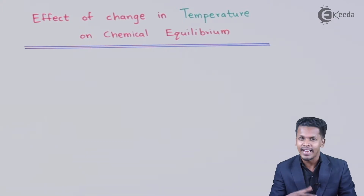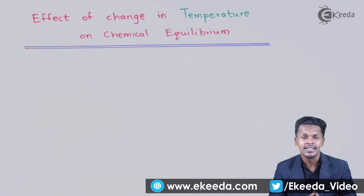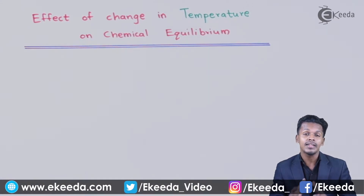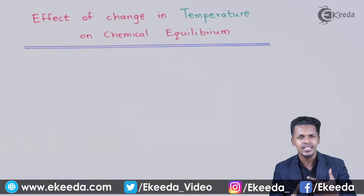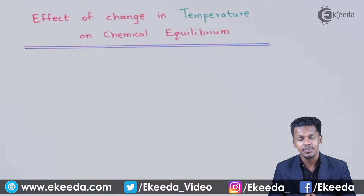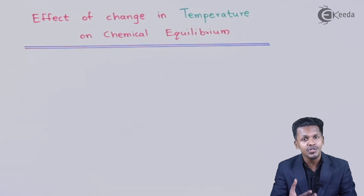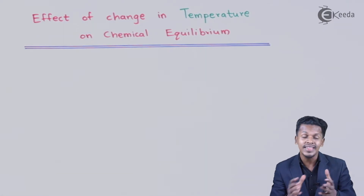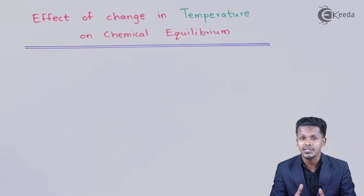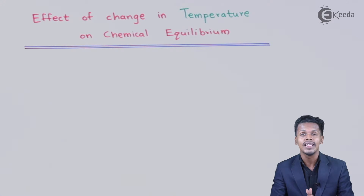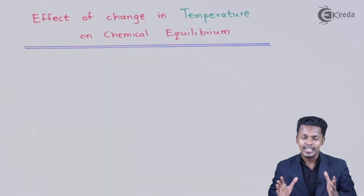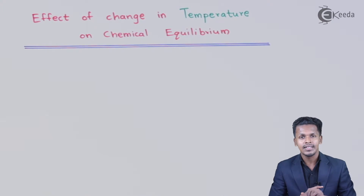A particular reaction can exhibit either an endothermic or an exothermic reaction. Whenever a reaction involves heat, the temperature can be increased or decreased. If we make a sudden change in temperature for a reaction at chemical equilibrium, we can shift it toward a forward or backward reaction — and this is all based on Le Chatelier's principle.